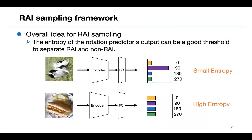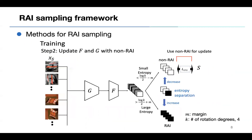For sampling RAI, we focus on the difference in the difficulty of rotation prediction. The entropy of the rotation predictor's output can be a good threshold to separate RAI and non-RAI. During training, RAI and non-RAI are separated by an entropy threshold, and a rotation predictor is trained using only non-RAI. This results in a large difference in entropy score between RAI and non-RAI during inference, making it possible to extract RAI with large entropy.